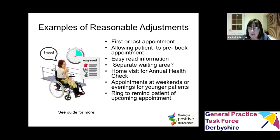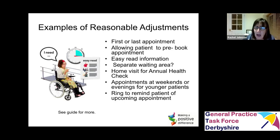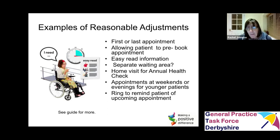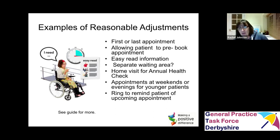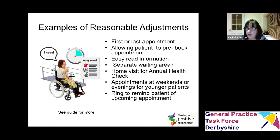It may be appropriate to have a separate waiting area for people with a learning disability — somewhere quieter to wait, or they might want to wait in the car and be called in when it's their turn. Some people don't like noisy waiting rooms. Consider a home visit for the annual health check in some circumstances — there may be individuals who won't come to the surgery no matter what, and a home visit might be easier, particularly if you're concerned they have lots of health problems that need addressing.